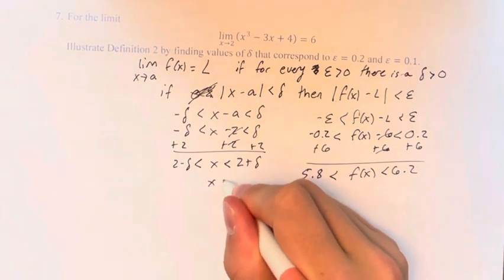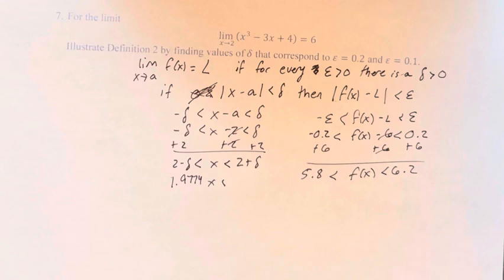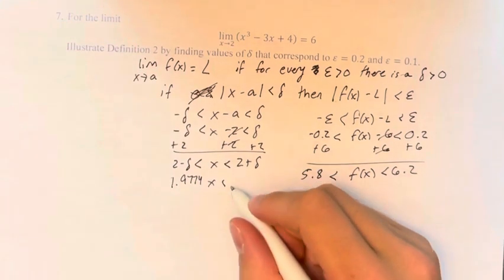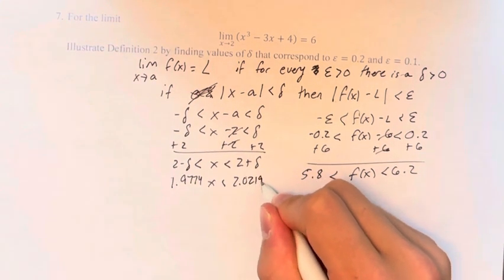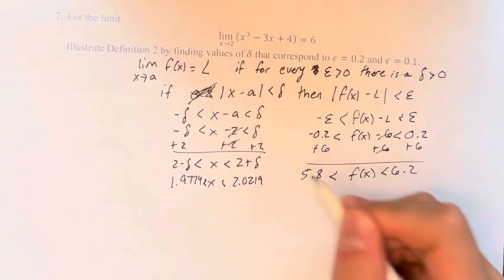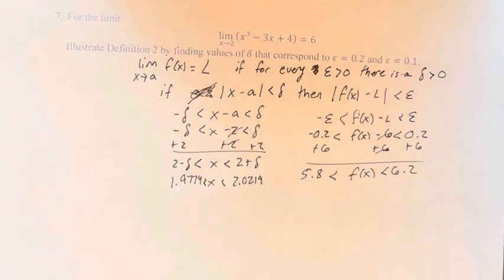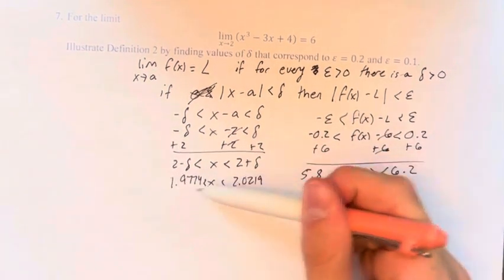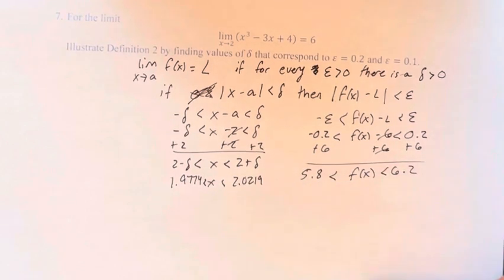x is between 1.9774 and 2.0219. And we're saying that between these x values, the function takes on these y values.